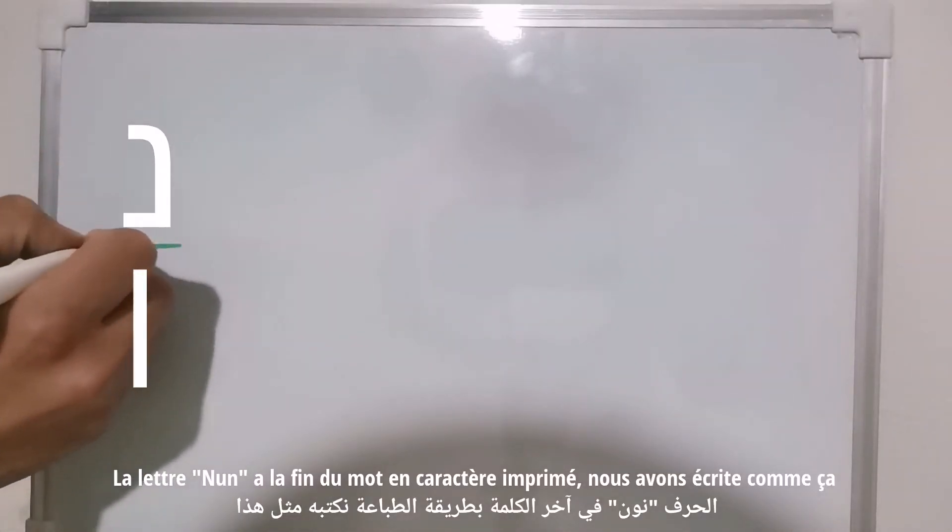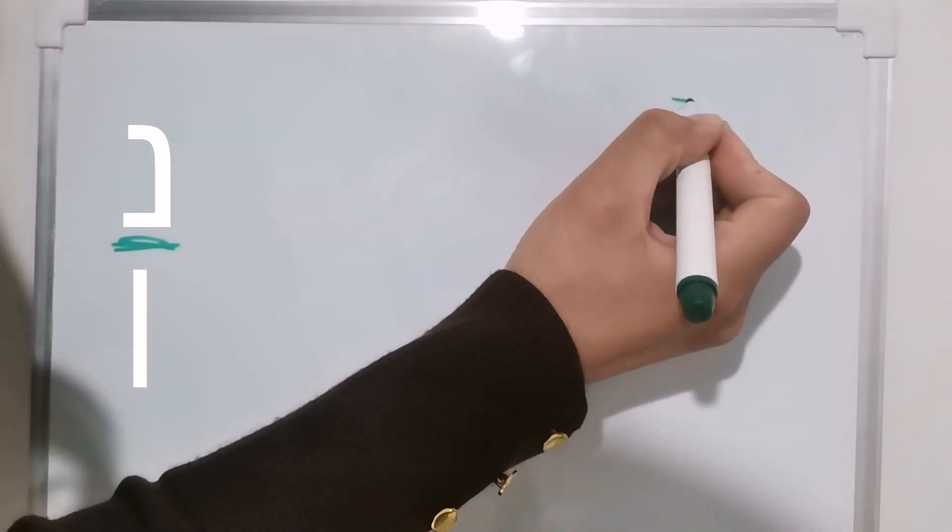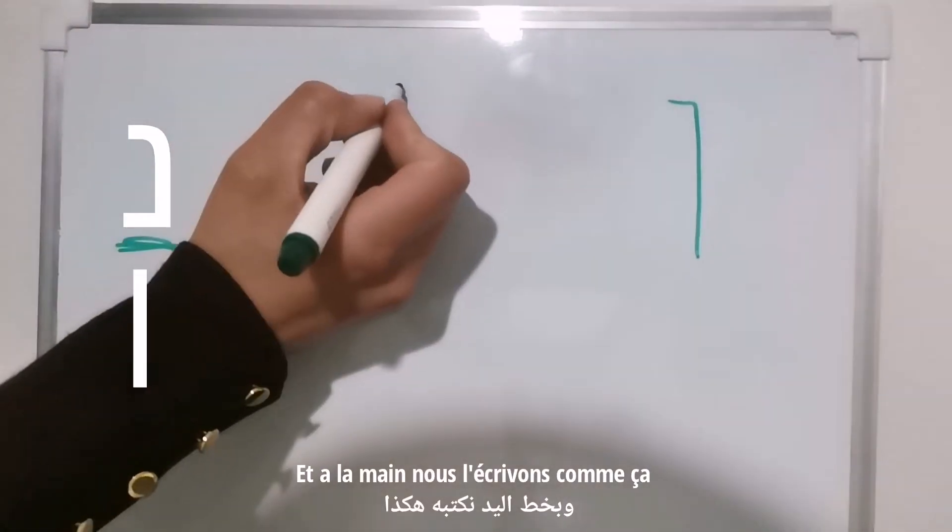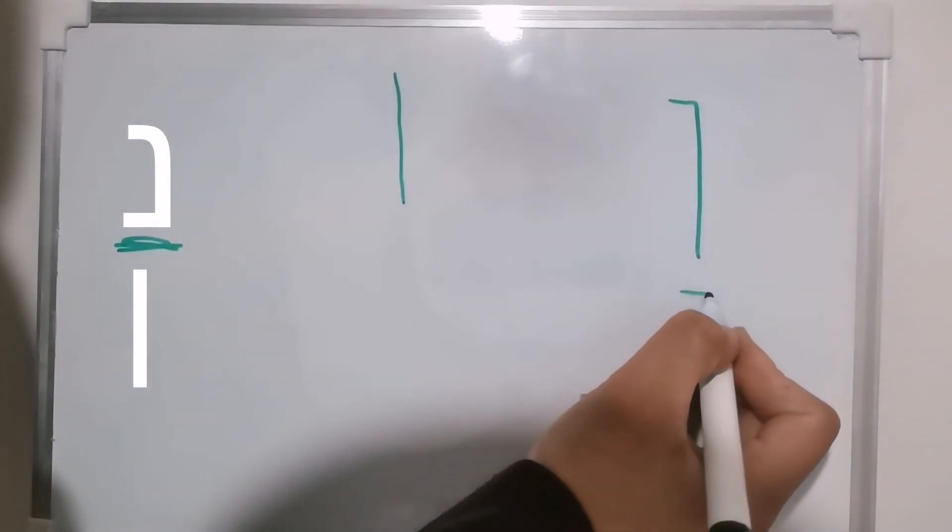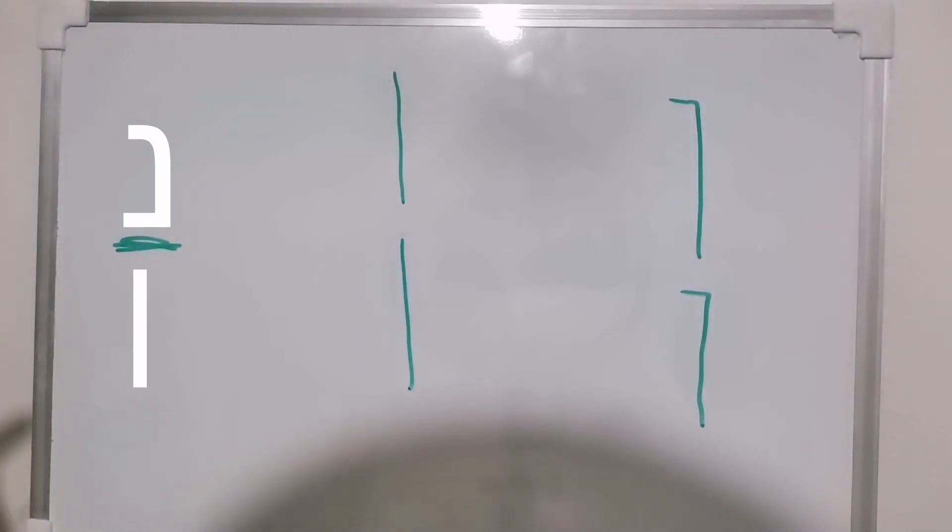The letter Nun at the end of the word, the print version, we write it like this. In script we write it like this. Let's write it again. It is very easy. So we call it Nun Sofit, and we write it at the end of the word.